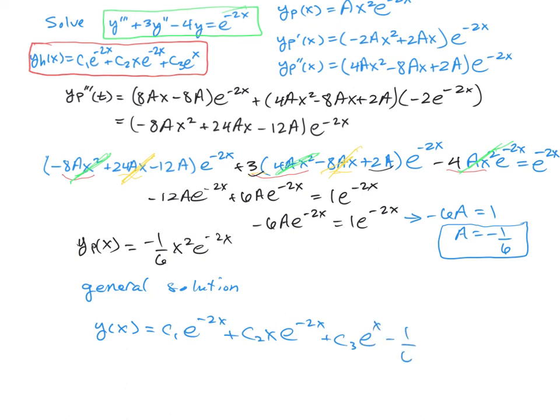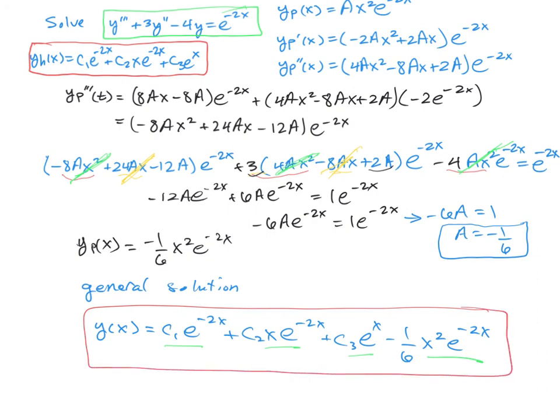And now minus 1/6 x²e^(-2x). All four of these terms are linearly independent, so we have our full general solution of the inhomogeneous equation.